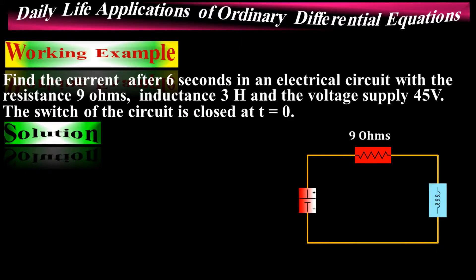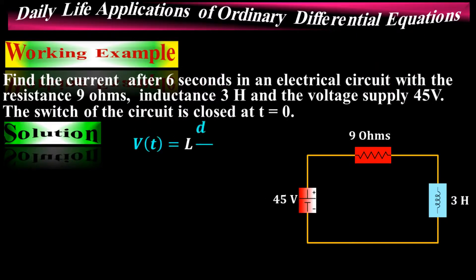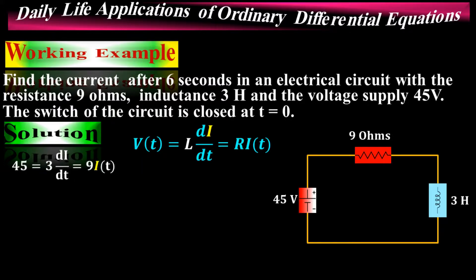This is the electrical diagram where the resistor is 9 ohms, inductance is 3 Henry, and voltage supply is 45 volts. The governing ordinary differential equation for this circuit is V(t) equals L times dI/dt plus R times I(t). Substituting the values: 45 equals 3 times dI/dt plus 9 times I(t).